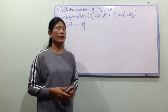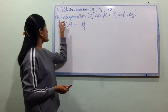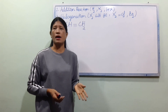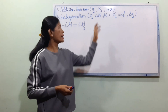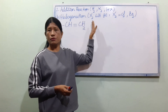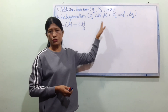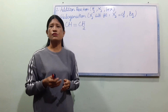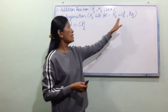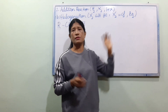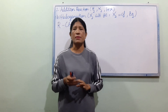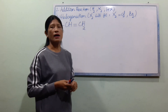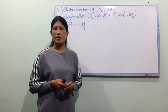The next reaction is halogenation. Halogenation involves a halogen. So we use a halogen. It is a complex reaction, so we use a halogen.